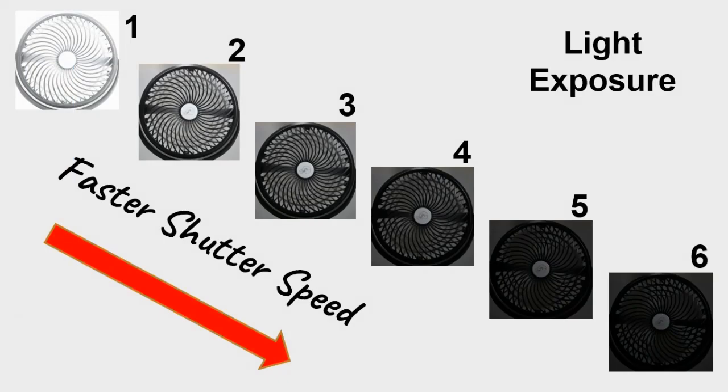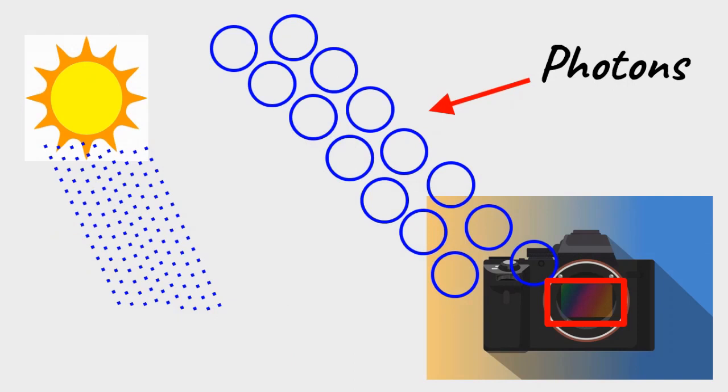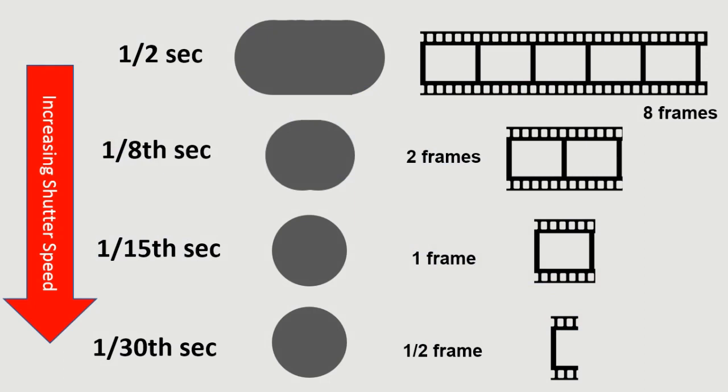Remember how, for faster shutter speeds, the photograph of the fan kept getting darker and darker? That's what happens. Photons carry energy that gets absorbed by your camera's sensor. Each frame roughly has the same number of photons, unless the brightness of individual frames change drastically.